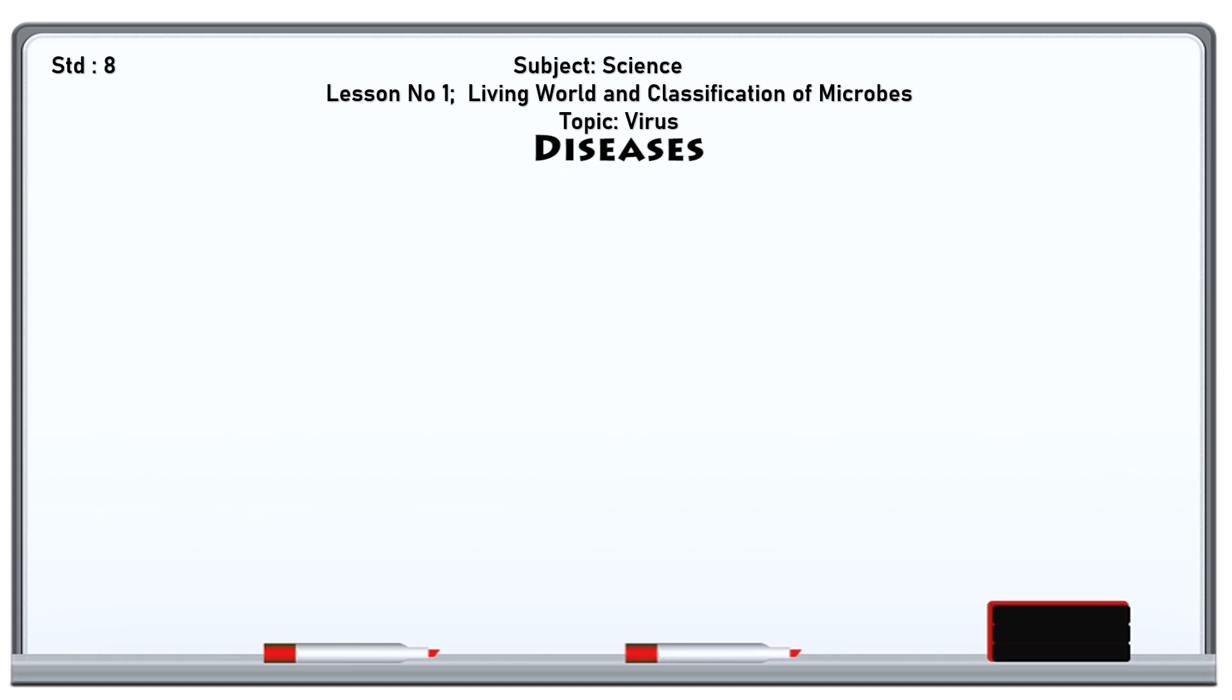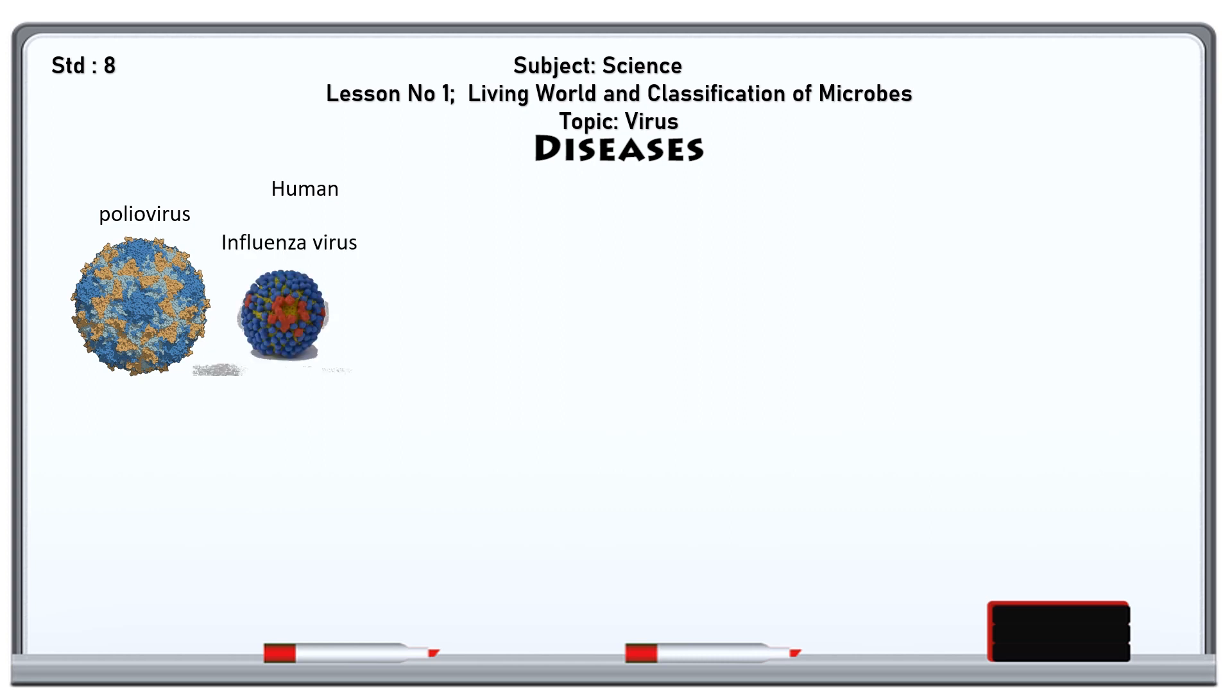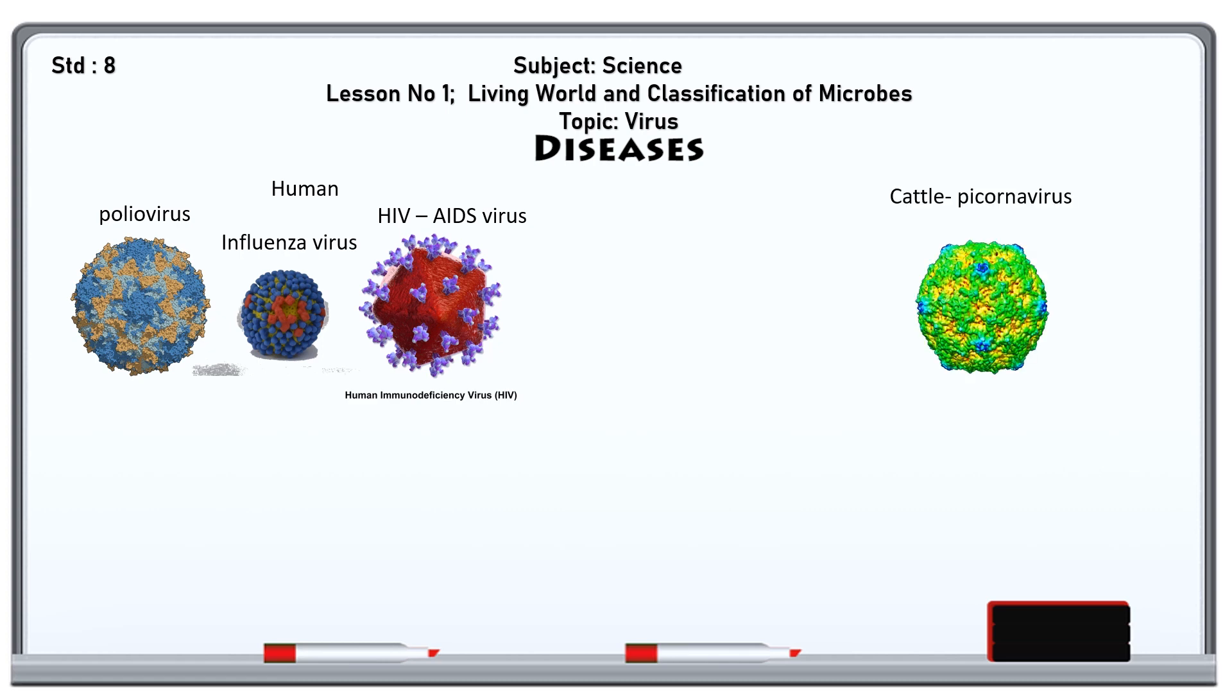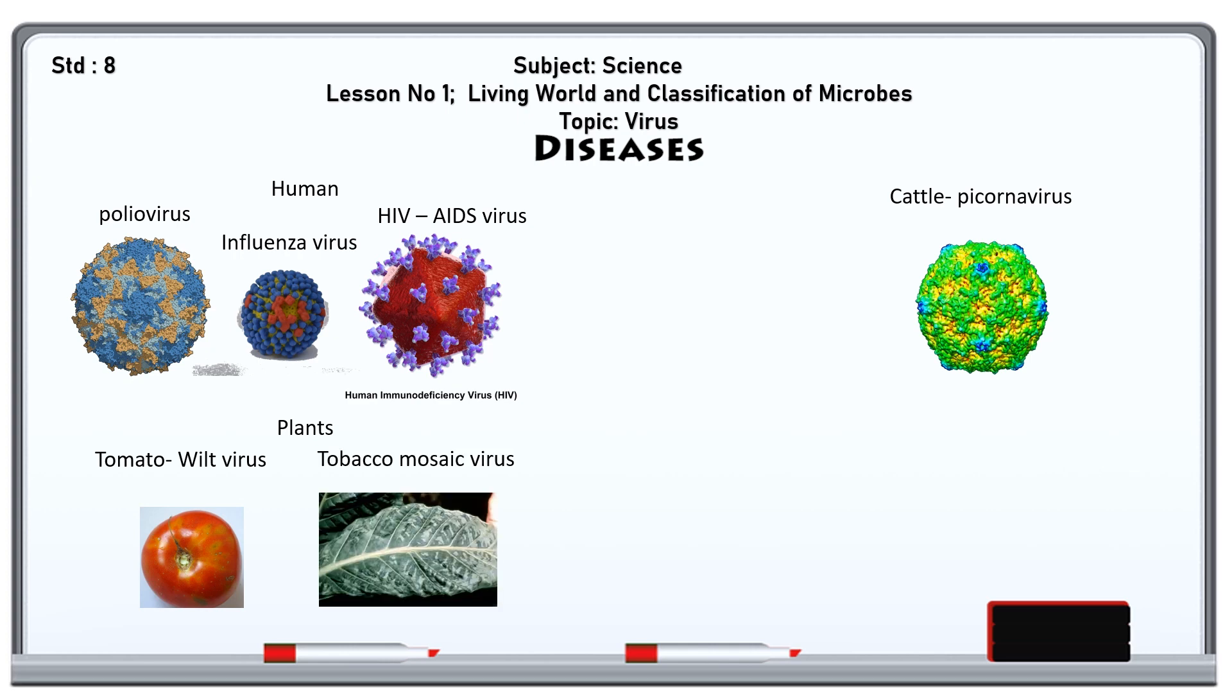Viruses can cause many diseases in plants and animals. Let's look at some examples. In human, polio virus cause polio. Influenza virus cause the common cold. HIV virus cause AIDS. Picarna virus affects cattle while tomato wilt virus and tobacco mosaic virus affects plants. The bacteriophage affects only bacteria.